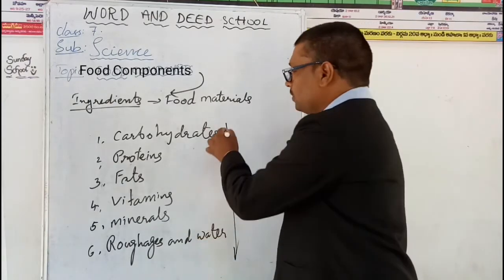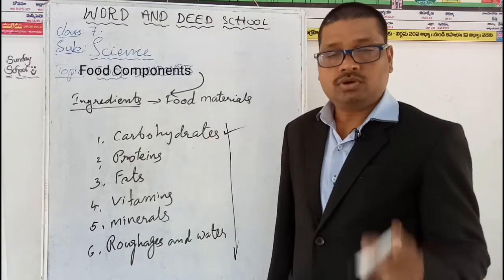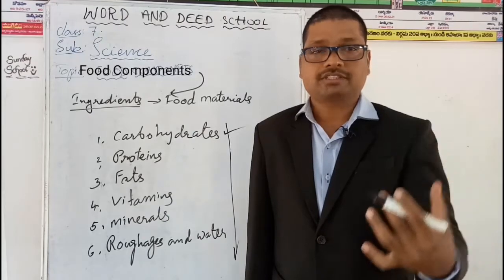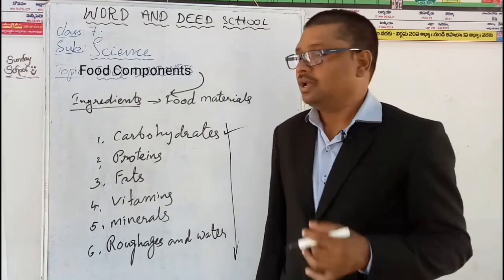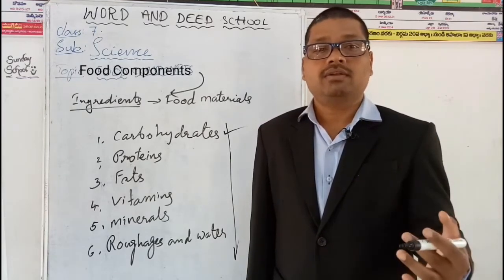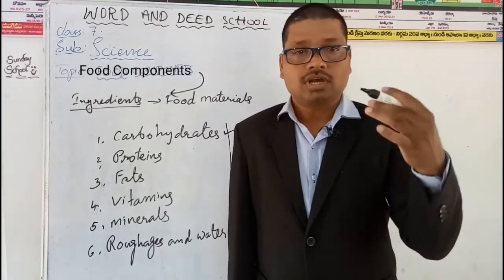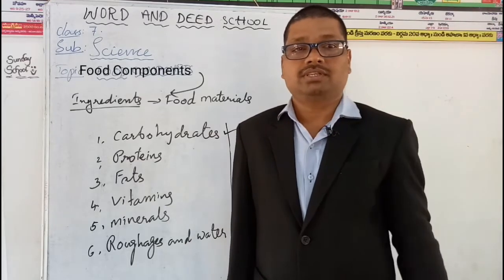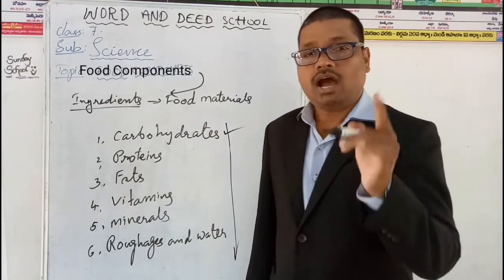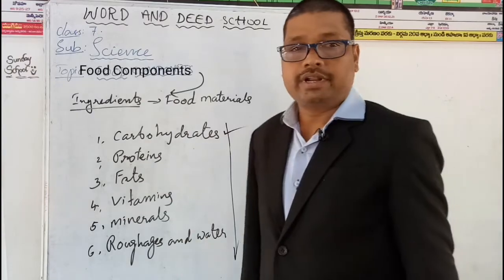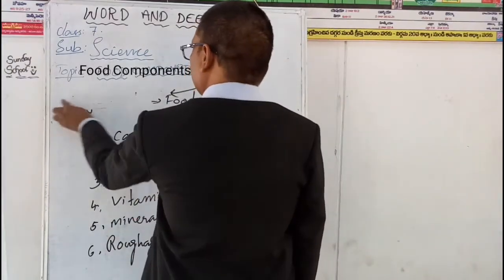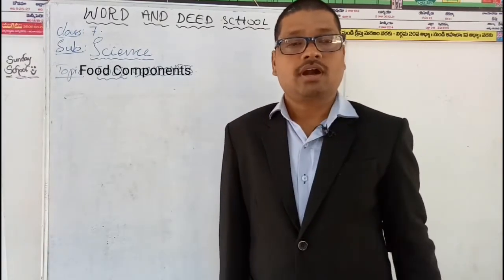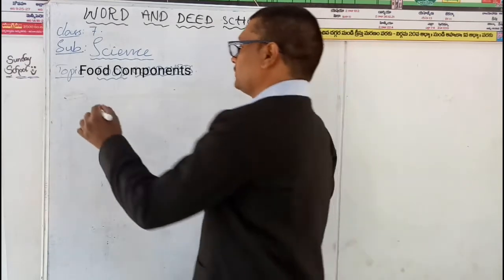Let us find out the presence of carbohydrates in a given food item. So let us do that experiment. In this experiment, we have to take some apparatus — the required things to do that experiment. We have to do the experiment and then conclude it. The conclusion, or inference, is the declaration of the result at the end of the experiment. What is our aim? The aim is to find the presence of carbohydrates in a given food item.